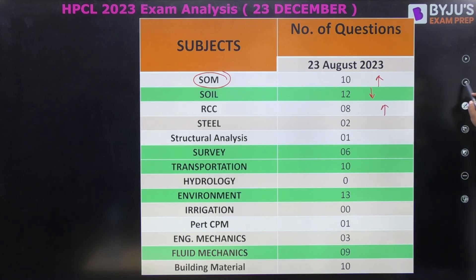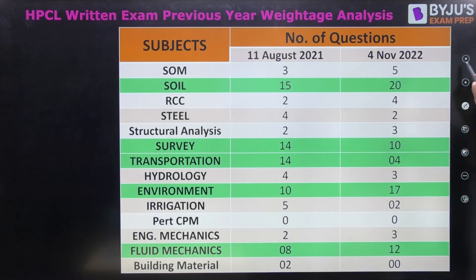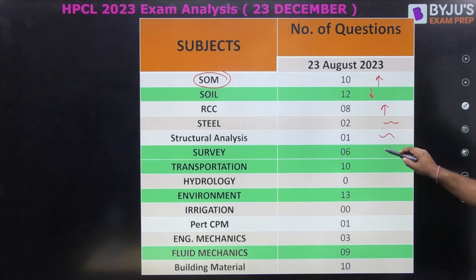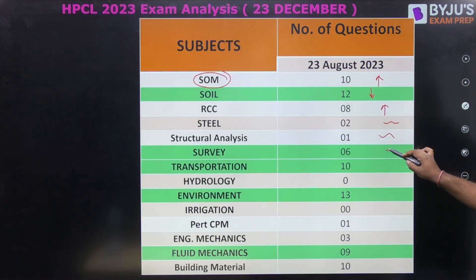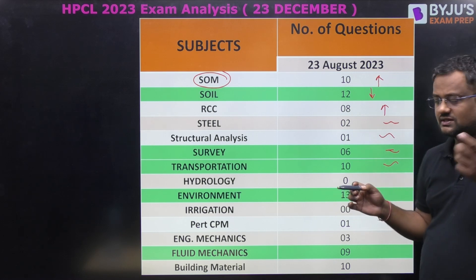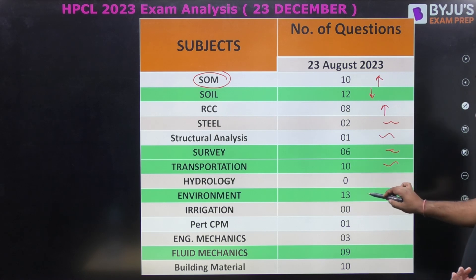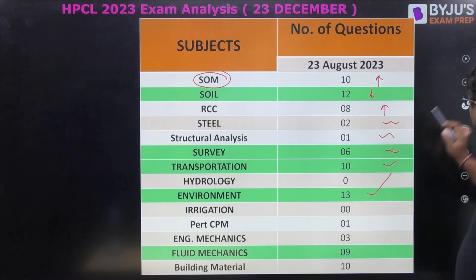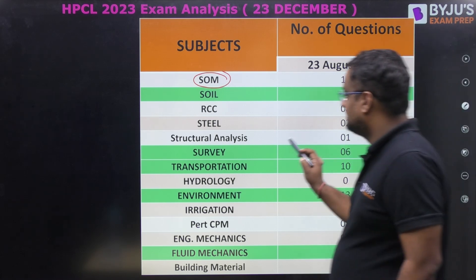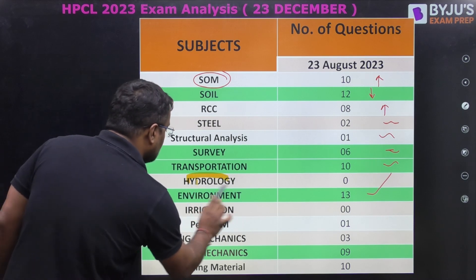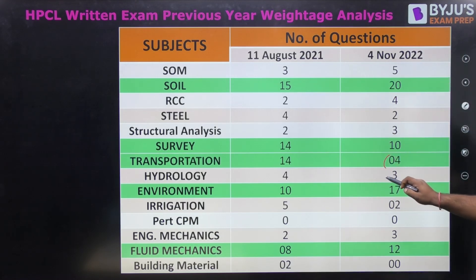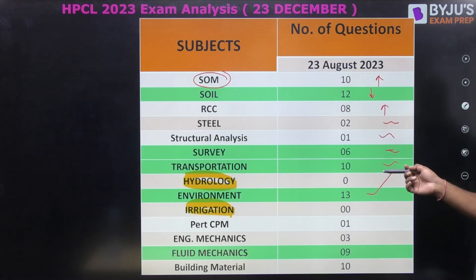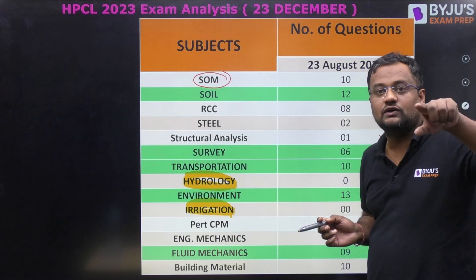Steel weightage is more or less the same. Structural analysis is also about the same — 2 to 3 questions. Transportation engineering has some fluctuation: earlier it was 4 questions, sometimes 14, and this time it is 10 questions. Environment also had higher weightage before. The big surprise this time is that not a single question was asked from hydrology, irrigation, or Ganga hydrology — whereas in 2021 and 2022 there were questions from these topics. But you cannot expect the same for 2024.